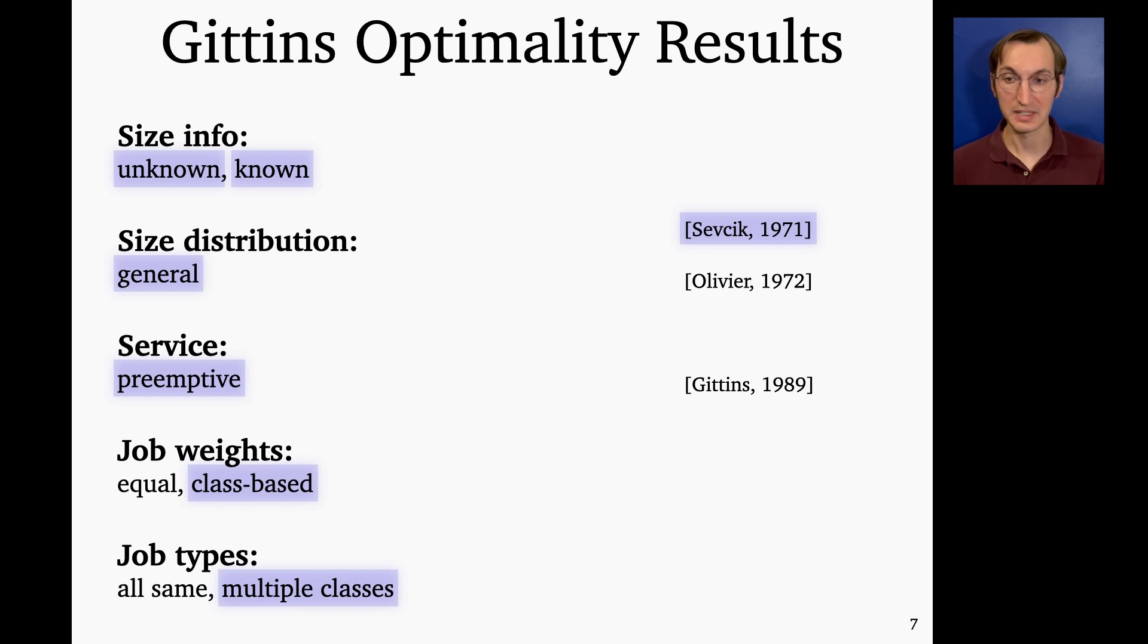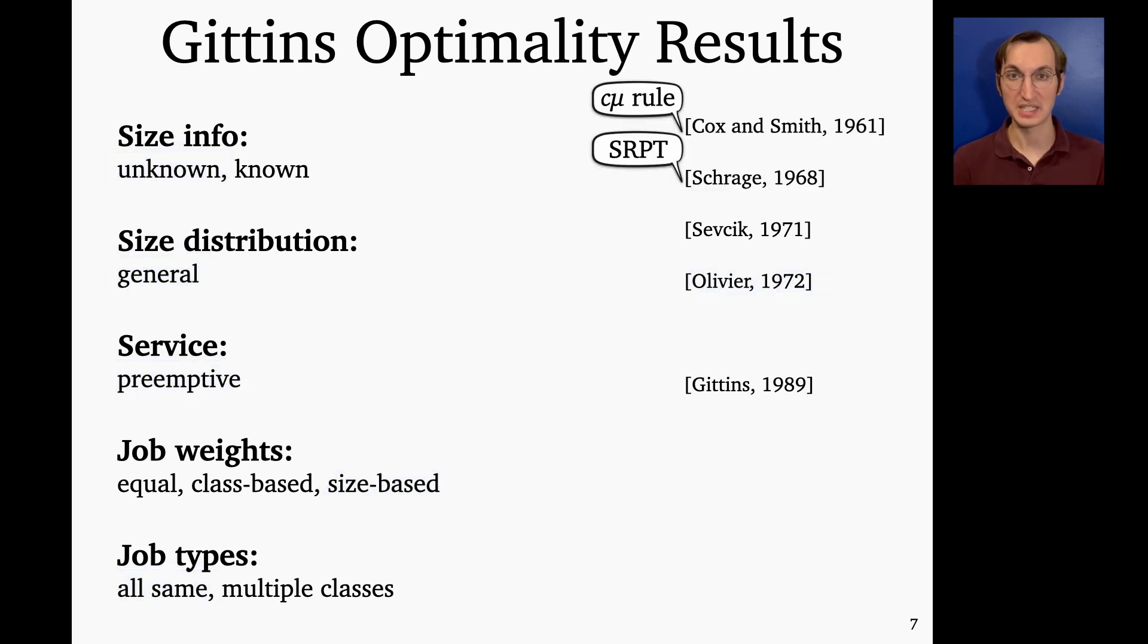Okay, and then similarly, Olivier goes a bit further, in this case showing that Gittins is optimal even when a job's weight is based on its size. Okay, but we can go beyond even the types of things I've listed on the slide already. So for example, you can view some prior results, some more basic scheduling algorithms as special cases of Gittins, like SRPT or the cμ rule. So for example, SRPT is when you have known job sizes, general size distribution, preemptive service, and then all jobs' weights are equal and all job types are the same. So SRPT minimizes mean response time, which is this scheduling problem. Similarly, the cμ rule is optimal for mean weighted response time when either you have preemptive service and exponential service times or non-preemptive service and general service times.